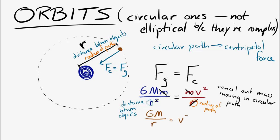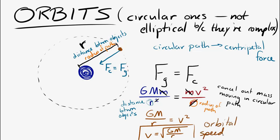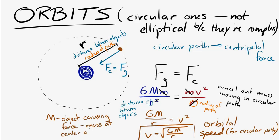The equation simplifies and we can solve for v: v equals the square root of GM over r. That is called the orbital speed — the orbital speed of an object traveling in a circular path due to gravitational force. That capital M is the mass at the center of the orbit (the earth, in the earth-moon system), and r is the radius of the path, which equals the distance between the two objects.